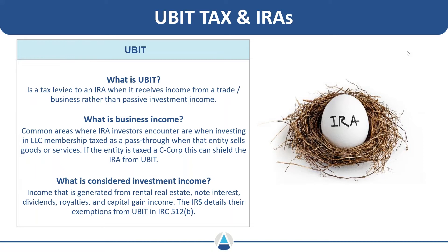Electing to have an entity taxed as a C-corp would automatically act as a blocker for UBIT. Investment income that is generally considered exempt from UBIT includes rental real estate, note interest, royalties, and capital gain income. You can look to Internal Revenue Code Section 512(b) for what is exempted. Pass-through income from an active trader business and investment income are two different buckets when it comes to these types of taxes.